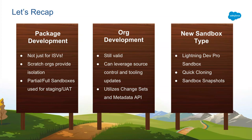What we've done is provide some of the tools from the package development side to the org development side to make it easier for you. Org development uses change sets and the metadata API. And of course the big announcement, last but not least, is the new Lightning Dev Pro Sandbox, which will give you quick cloning and sandbox snapshots. That's true innovation from us, and hopefully it'll help you develop your apps faster with better quality.